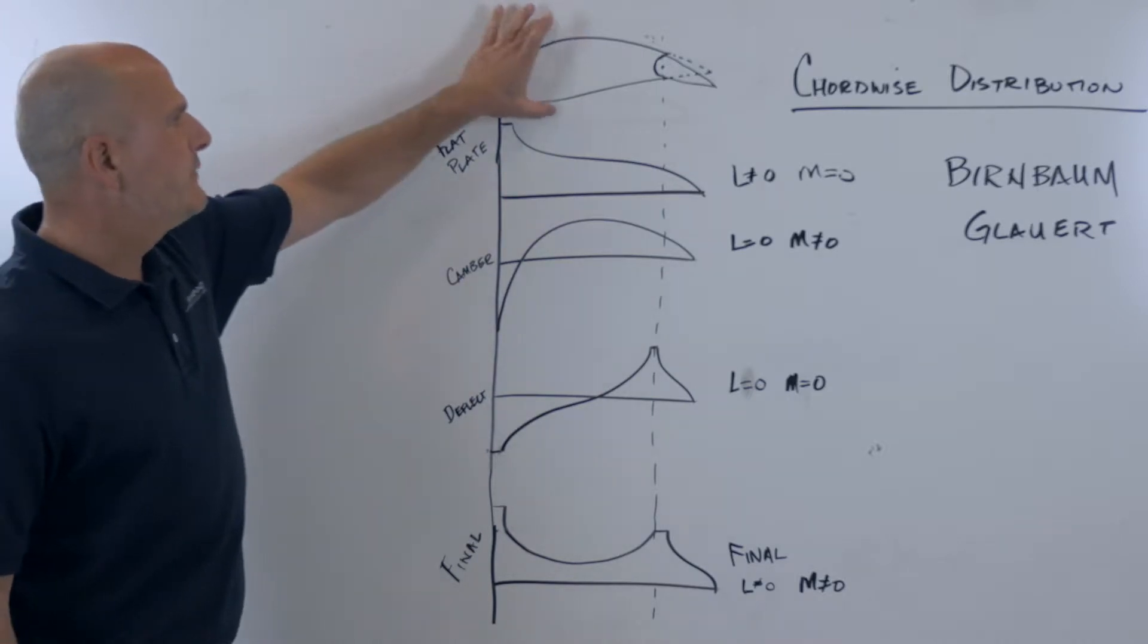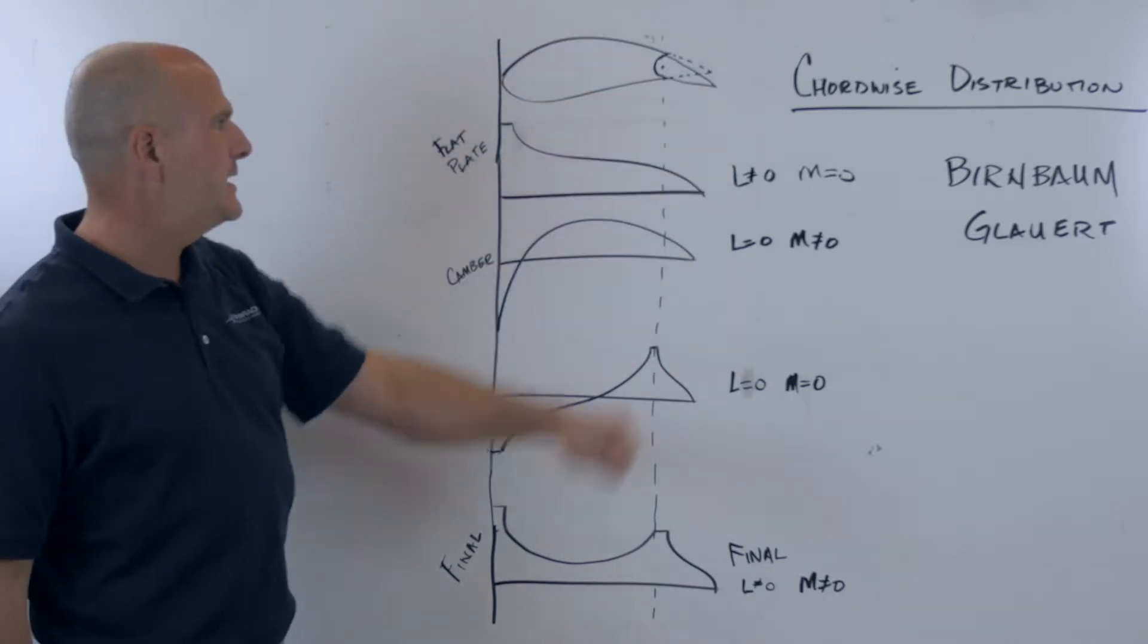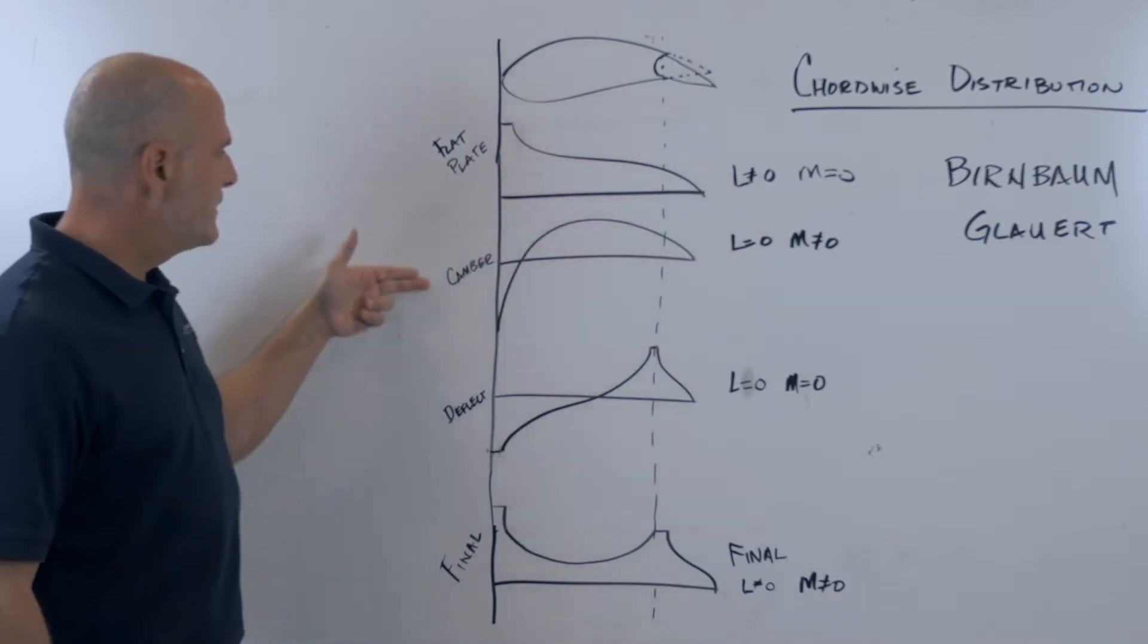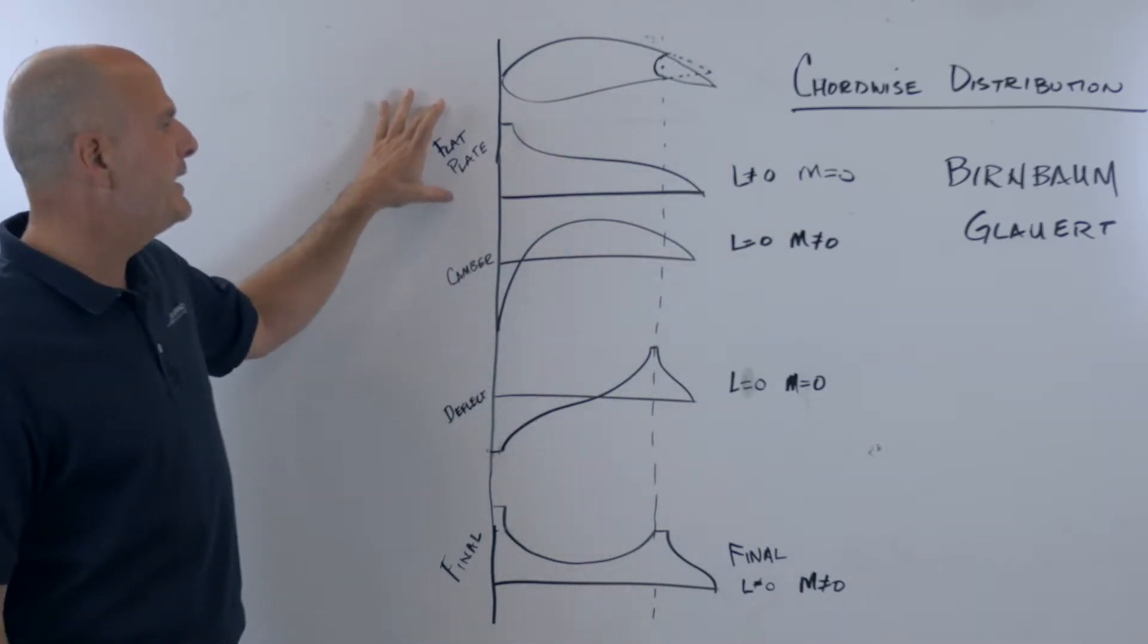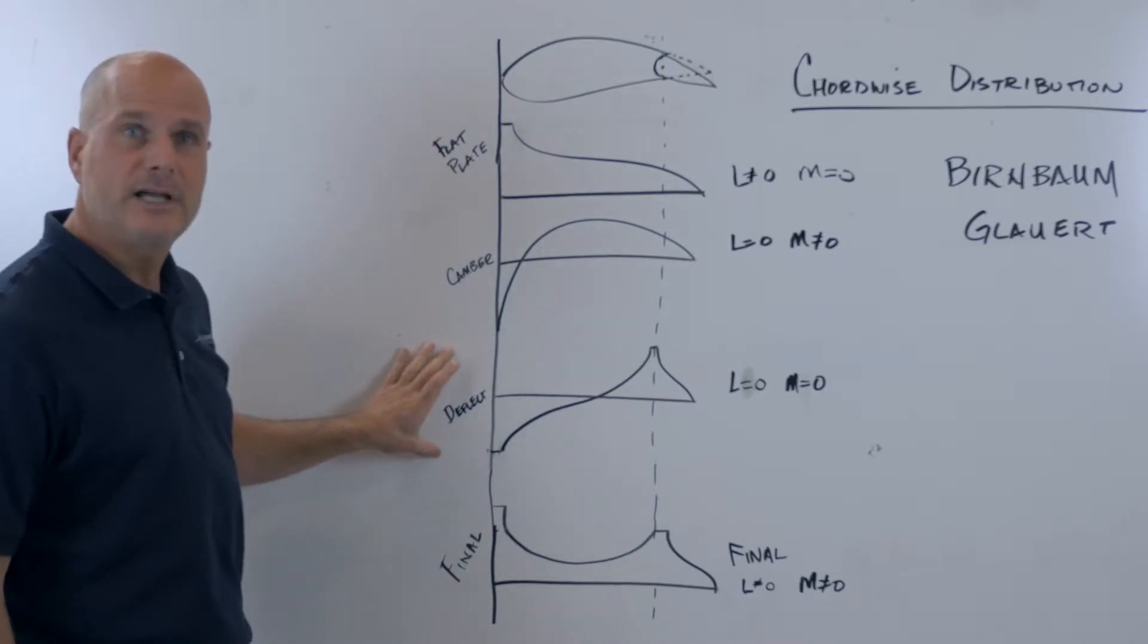We start with an airfoil with a small deflected trailing edge device. They theorize that there's three different forces acting on this airfoil. One that's derived from flat plate, one from camber and one from deflection.